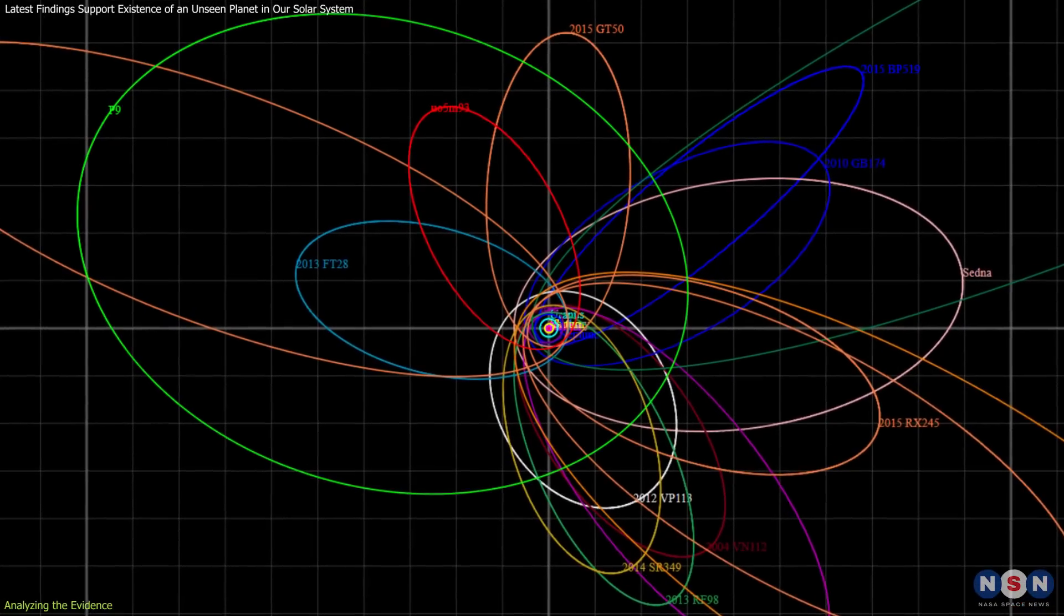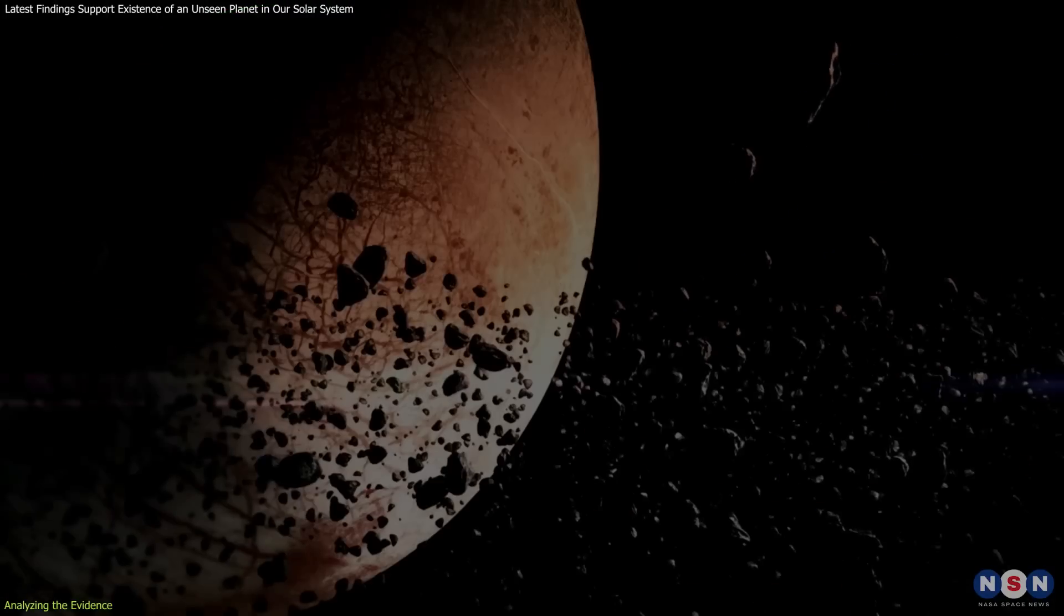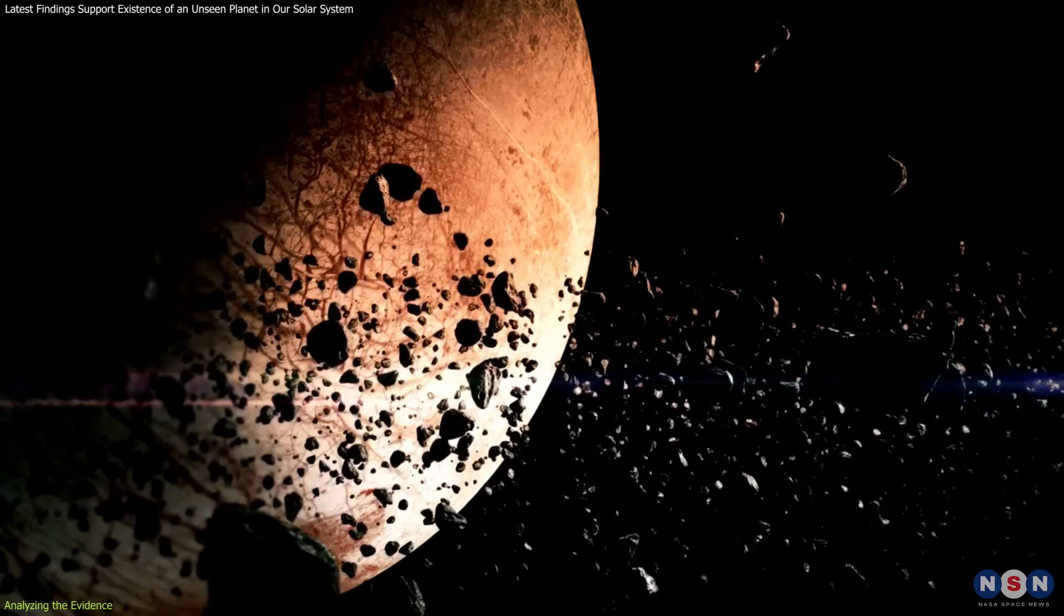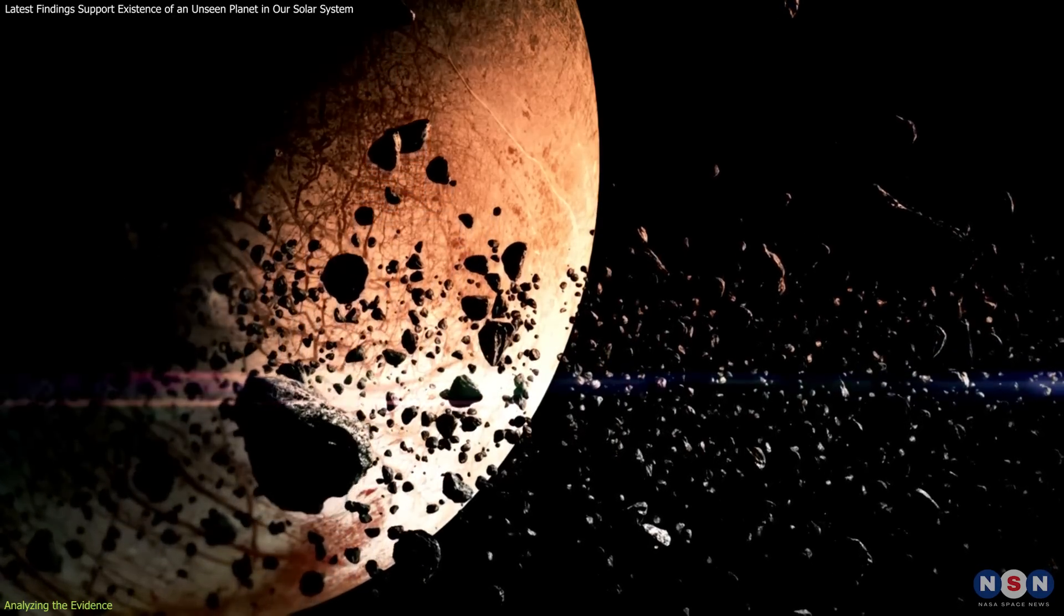These simulations have helped confirm that the alignment of these orbits is most likely due to the gravitational pull of Planet 9, rather than any errors in how the observations were made.